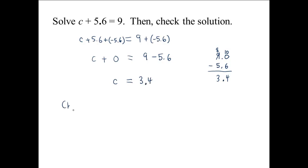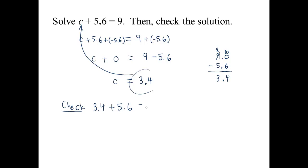We're supposed to check. We take 3.4 and put it back in for c: 3.4 plus 5.6 equals 9. Adding the decimals vertically: 4 plus 6 is 10, carry the 1; 1 plus 3 plus 5 is 9. We get 9.0, which is the same as 9. So 3.4 is indeed the solution for c.